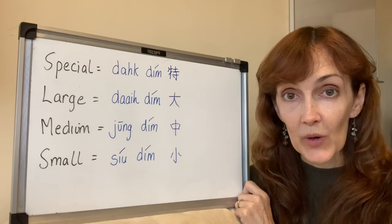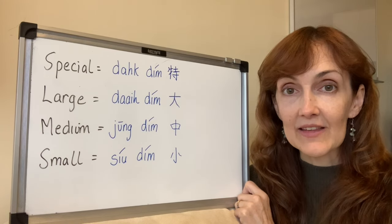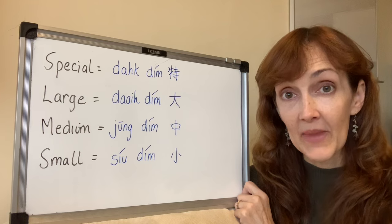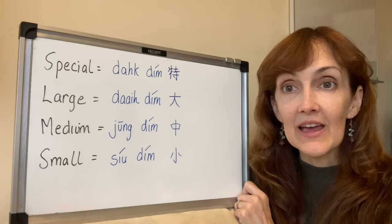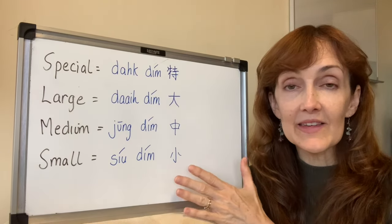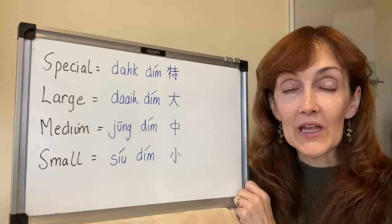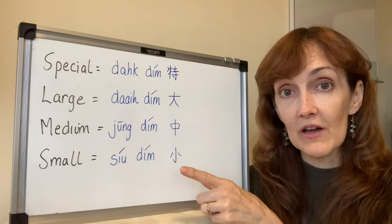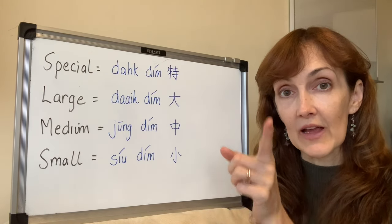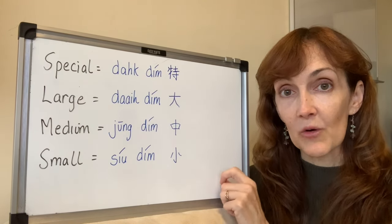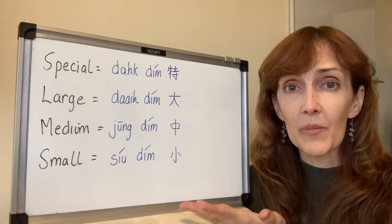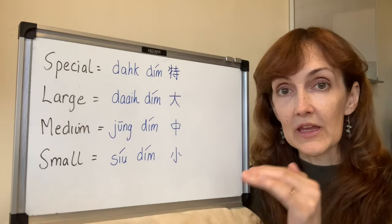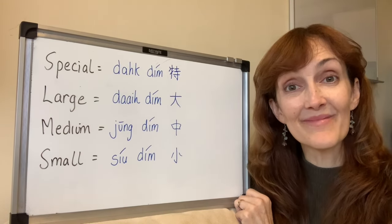Siu dim are the cheapest ones, so for those you're going to pay the least amount. These are the different ways that dim sum is priced. When you get your dim sum zi, you can match the character that comes after what you're ordering to the line somewhere on the paper that denotes the different prices.